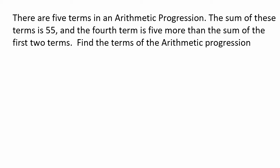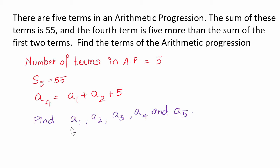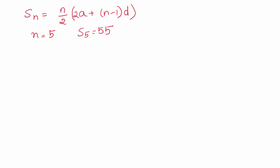What have they given? Number of terms in arithmetic progression in this case is 5. Sum of 5 terms is 55. And a4, which is the fourth term, is first term plus second term plus 5.